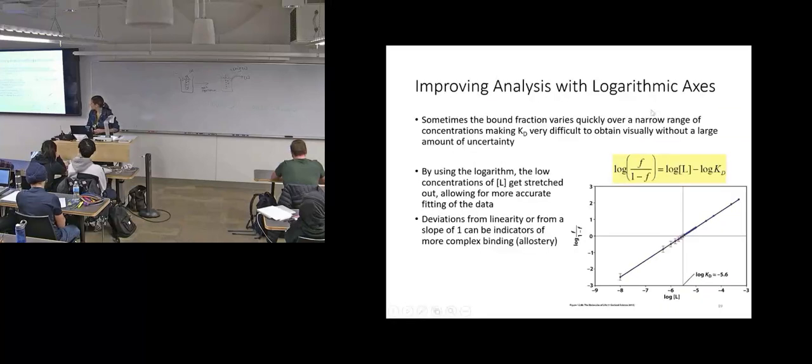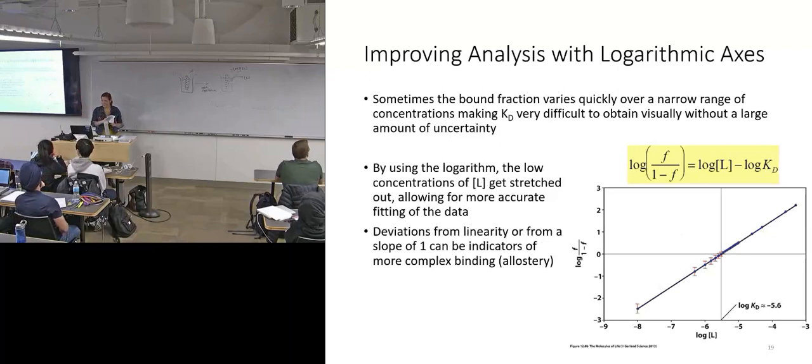Down here, so why do you think these error bars are increasing? Because we have our lower and lower concentrations of ligand. Where we don't have error bars on our samples on the higher.